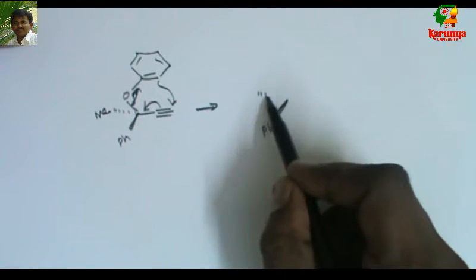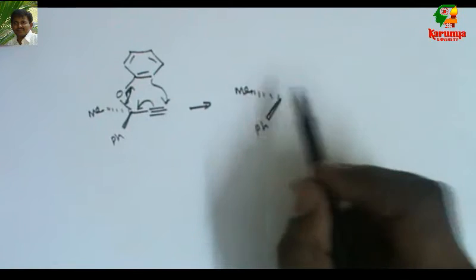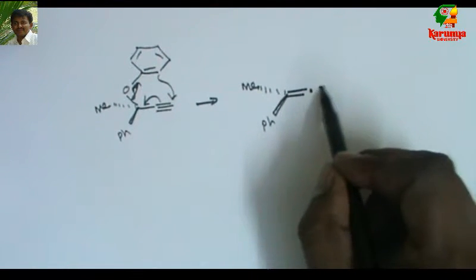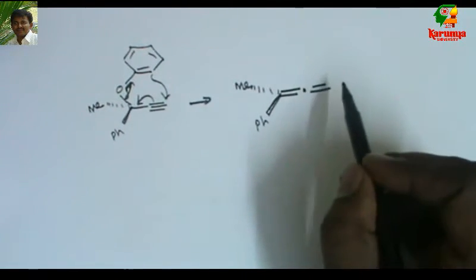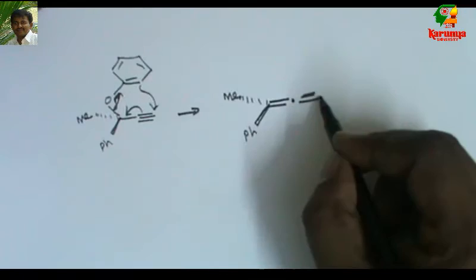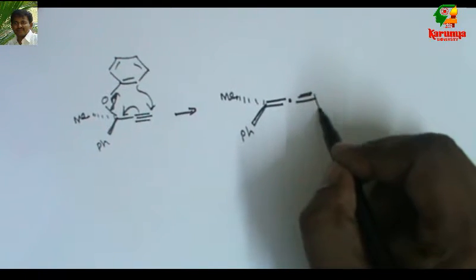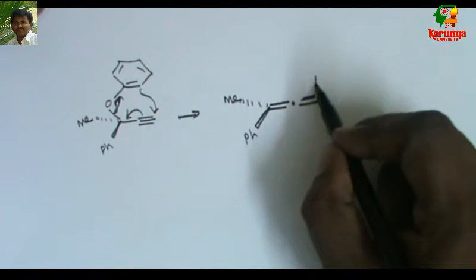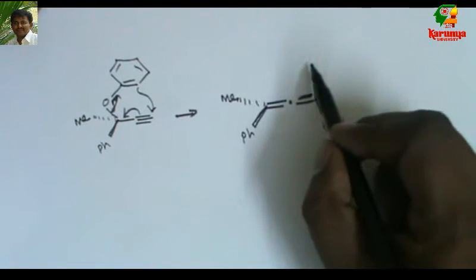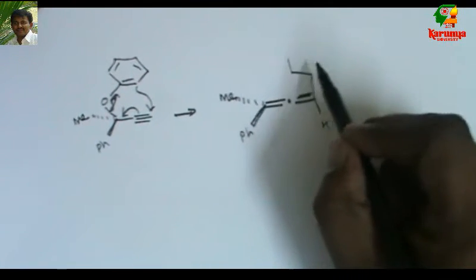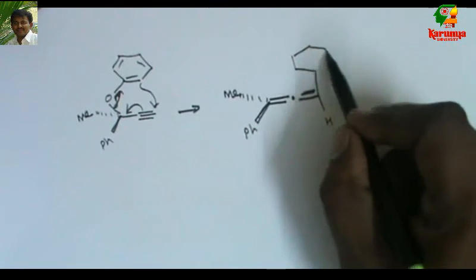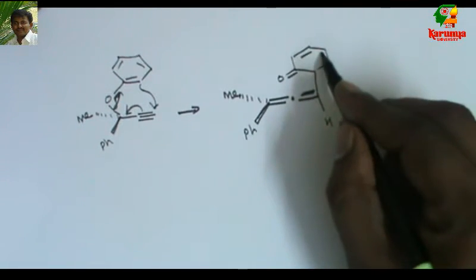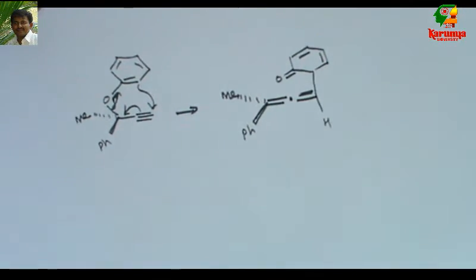Phenyl — it is written as such. Methyl — it is at the backside. This becomes an allene. Since it is attacking from the top, you get the product like this.